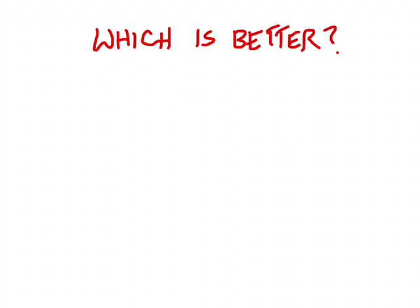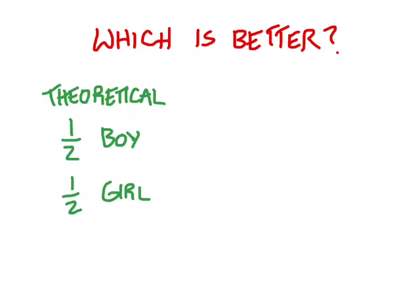For example, if I asked you, what's the probability of a couple having a boy or a girl baby? Without knowing anything about the couple, or who they are, what's happened to them in the past, you would probably say, oh, well, that's about a half probability. They have a 50-50 chance of a boy versus a girl. In other words, theoretical probability tells me that half the time we'll get a boy, half the time we'll get a girl. Well, that's supported by the way that cells divide and human reproduction works.